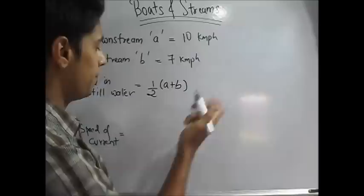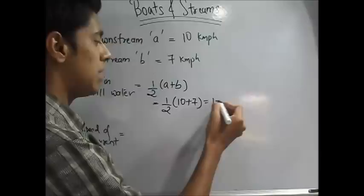You have to denote a as downstream always, because a will always be greater than b. So half of a is 10, b is 7. So that is 17 by 2 or 8.5 km per hour.